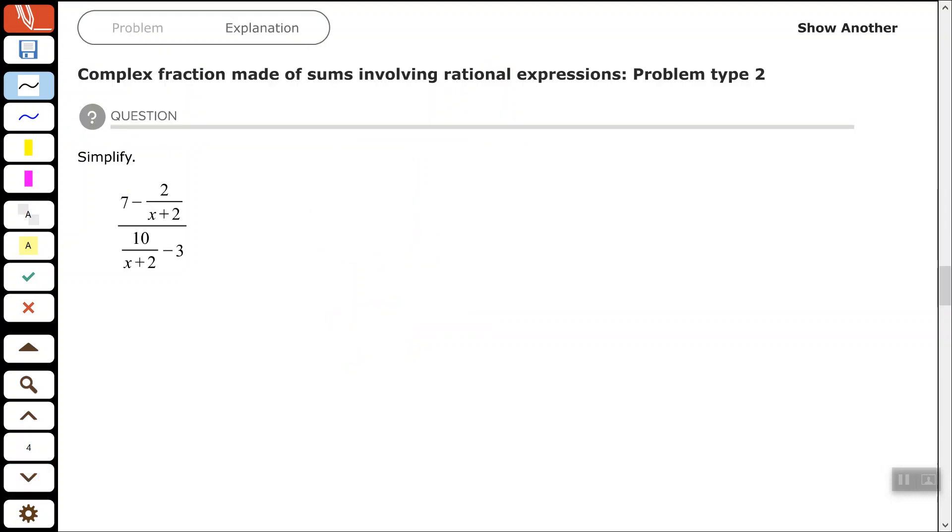Okay, so we have 7 minus 2 over x plus 2, all over 10 over x plus 2 minus 3. So again, I look at the small fractions, look at those denominators, and find the least common multiple of those denominators, which in this case, is only x plus 2. So I'm going to multiply the top and the bottom by x plus 2.